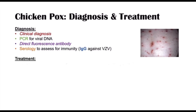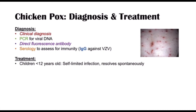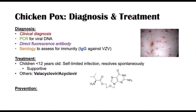For treatment: if a child has chickenpox and is less than 12 years of age, generally speaking, individuals resolve spontaneously. For individuals older than 12 years of age, we can use valacyclovir or acyclovir. There is also a way to reduce the severity or rates of chickenpox through prevention using the vaccine — MMRV: mumps, measles, rubella, and varicella vaccine.